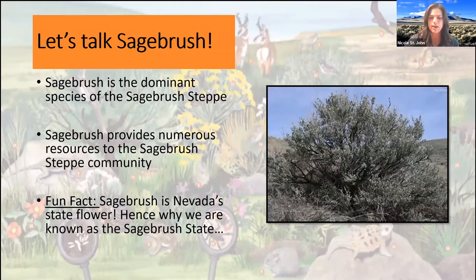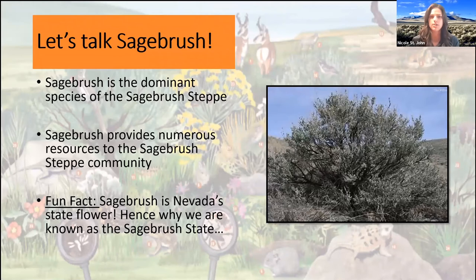There are many different species of sagebrush out on the landscape, but typically we break it down into big sage and low sage given the size of the sagebrush itself. Some common sagebrush species that you might find on the landscape include Wyoming big sage, mountain big sage, and low sage.